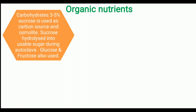Regarding organic nutrients, carbohydrates should be present in the nutrient medium at 3 to 5%. Sucrose is the most widely used carbon source and osmolite. During the autoclave sterilization process, sucrose is hydrolyzed into usable sugar, making it highly preferable. Alternative carbohydrate sources include glucose and fructose.